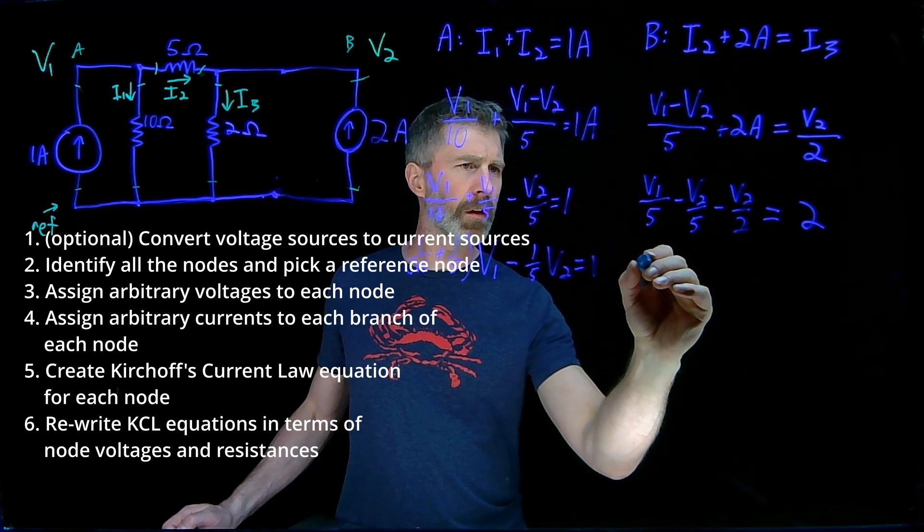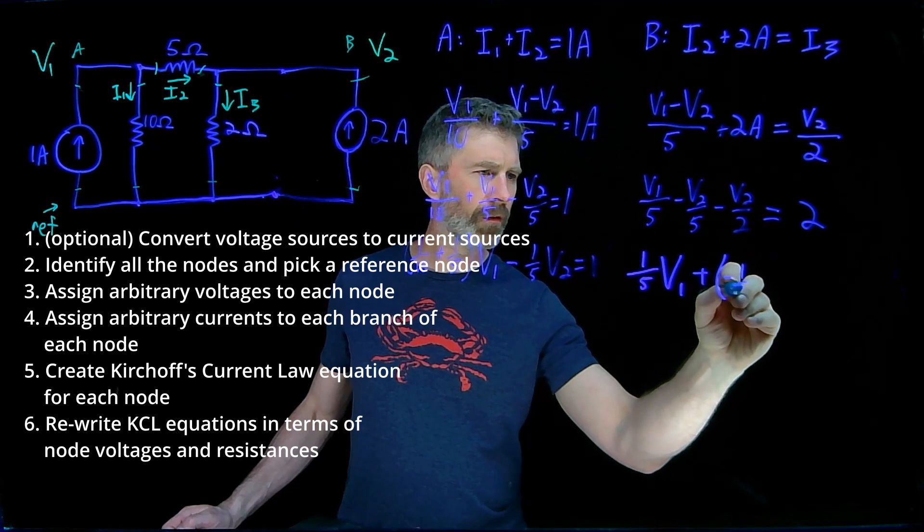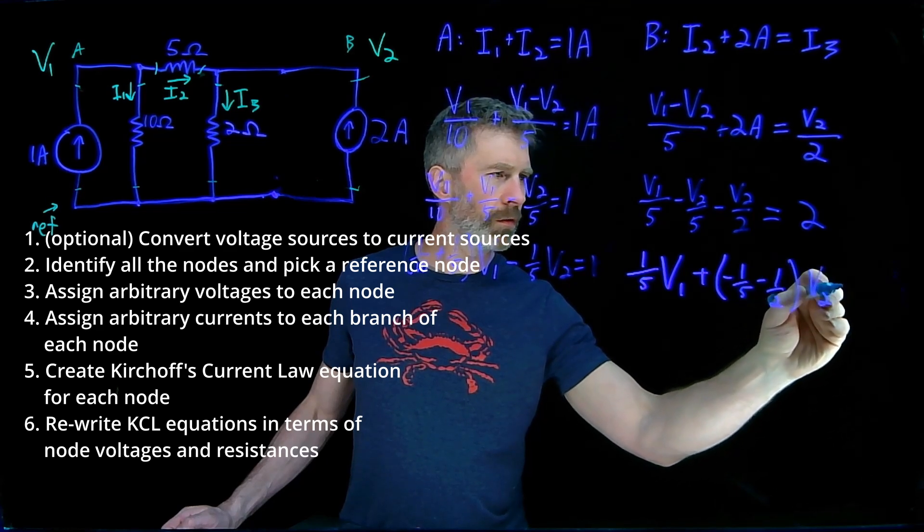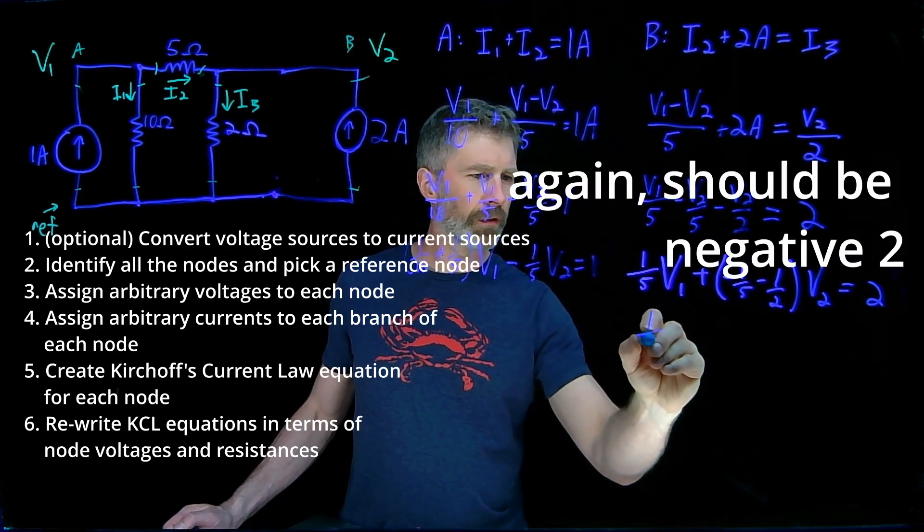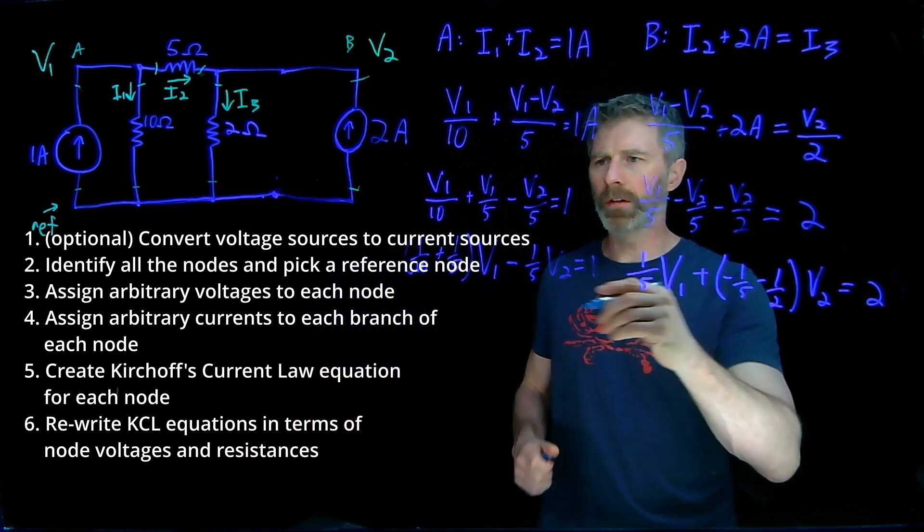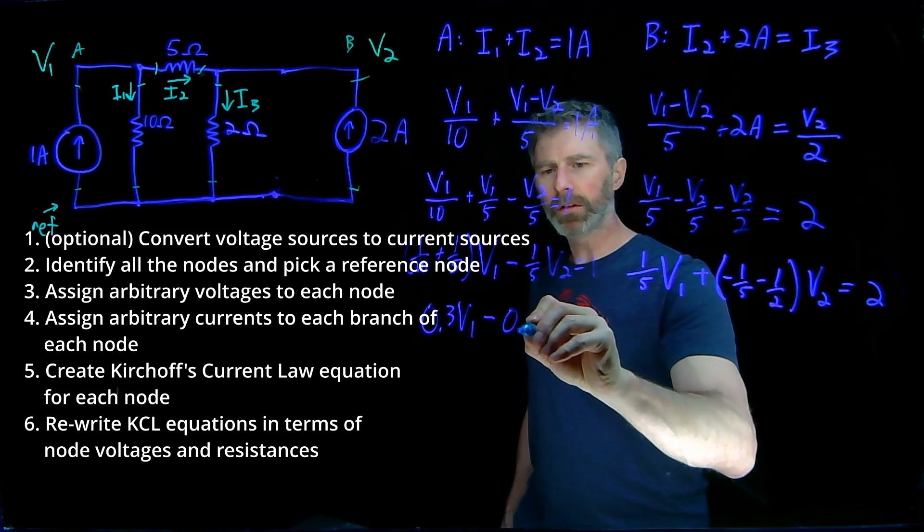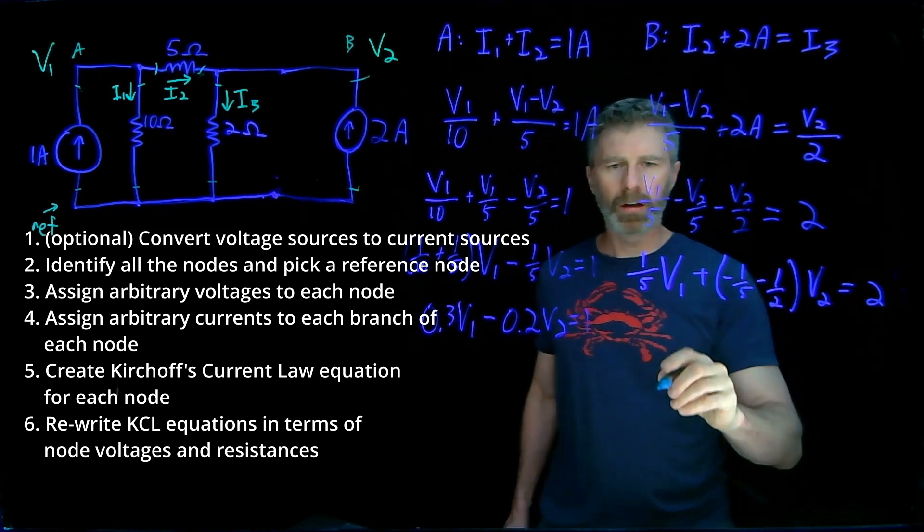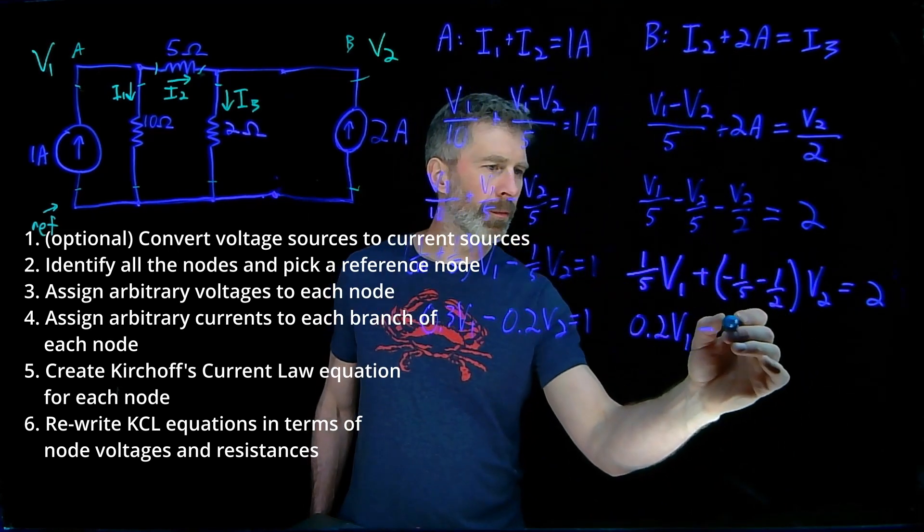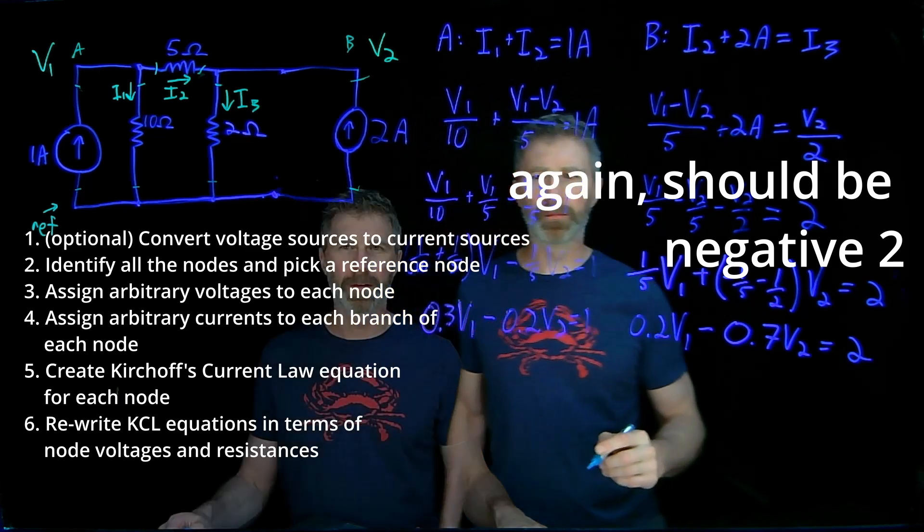For node B, what we have is one fifth V1 plus negative one fifth minus one half V2 equals 2. Let's do it in decimal form. We get 0.3 V1 minus 0.2 V2 equals 1. And here we get 0.2 V1 minus 0.7 V2 equals negative 2.